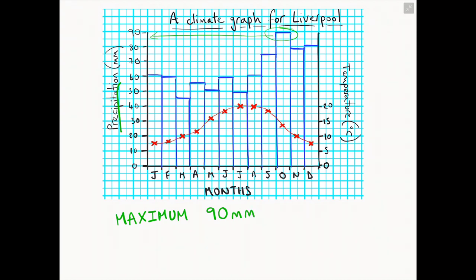If we repeat the same process for temperature, we are then referring to our right-hand axis and looking now for the highest x's or points on our line. Again, in this case, our maximum temperature for Liverpool is 20 degrees.